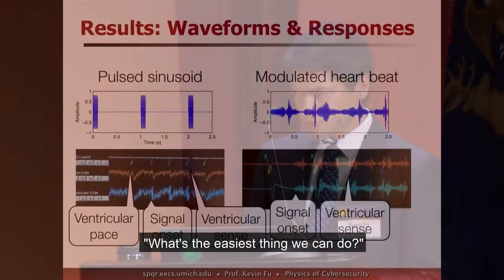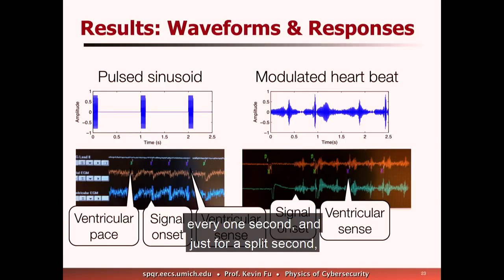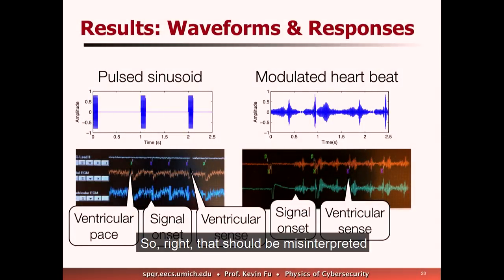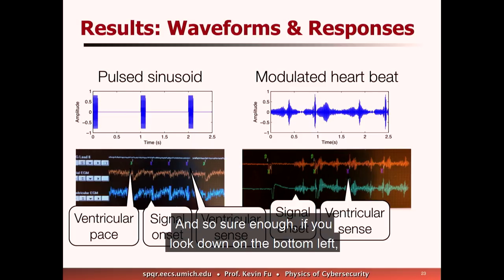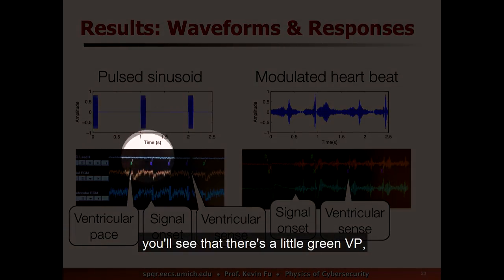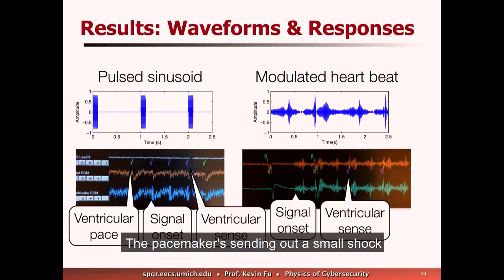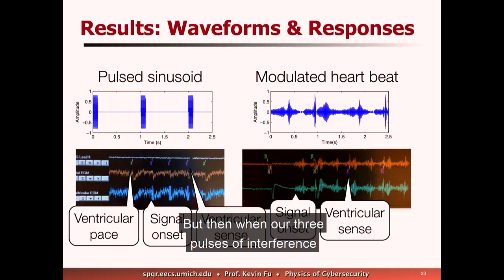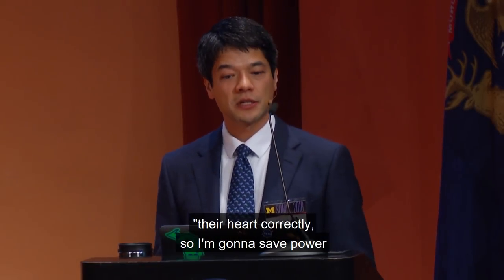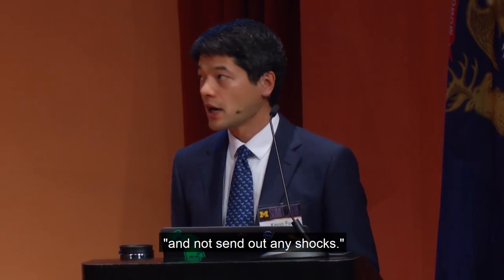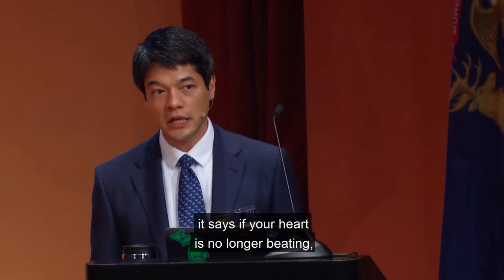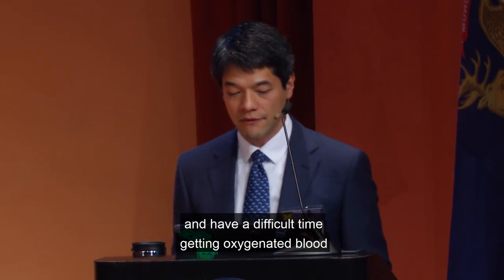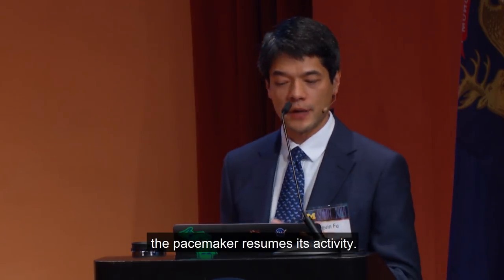We took a sine wave, pulsed it every one second for just a split second with a little amplitude — which should be misinterpreted as 60 beats per minute, a typical heart rhythm. Sure enough, looking at the bottom left, you'll see a green VP — ventricular pace — meaning the pacemaker is sending out a small shock to give it an artificial heartbeat. But when our three pulses of interference hit the pacemaker, it turns itself off. It has a VS in purple — ventricular sense — saying 'this patient seems to be pacing their heart correctly, so I'm going to save power and not send out any shocks.' In a normal patient, if this were to happen, it's as if your heart is no longer beating — very low blood pressure, difficulty getting oxygenated blood to your brain. When we turn off the interference, the pacemaker resumes its activity.